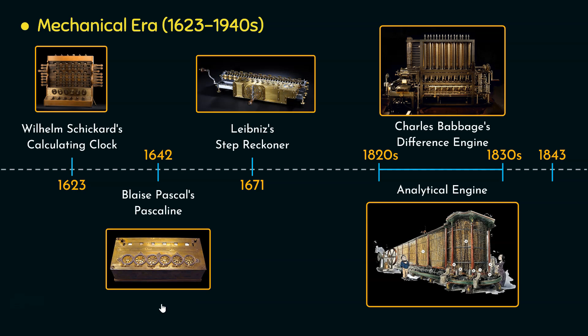However, the limitation of Pascaline was that it couldn't handle complex calculations like carrying over multiple digits. During 1671, Gottfried Wilhelm Leibniz's step reckoner provided aid in complex calculations. It could perform addition, subtraction, multiplication, and division. Additionally, it used a stepped drum mechanism to perform those operations, with each step representing a digit. This device, using repeated addition and subtraction, could perform multiplication and division respectively.